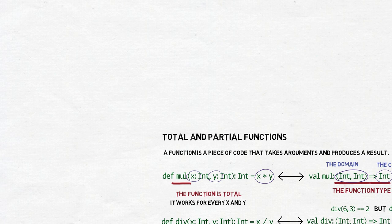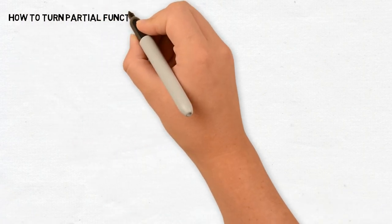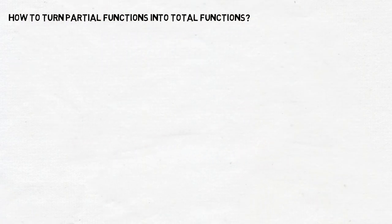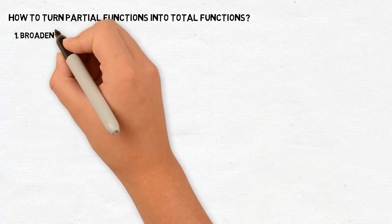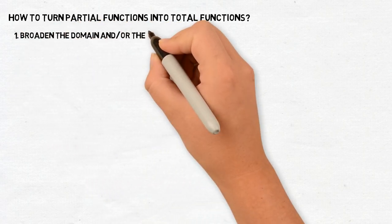Collect will ignore all elements which the partial function doesn't work for. There are two ways to turn a partial function into a total one. One is to simply broaden the domain and or the codomain.